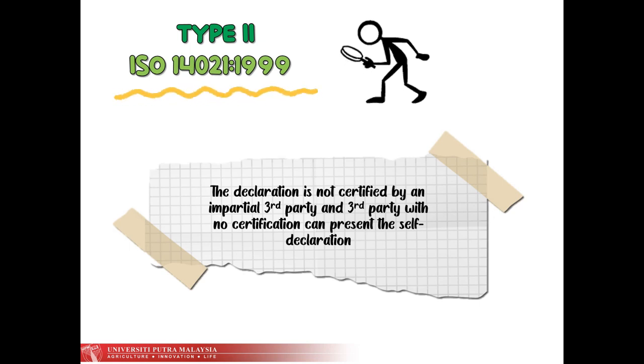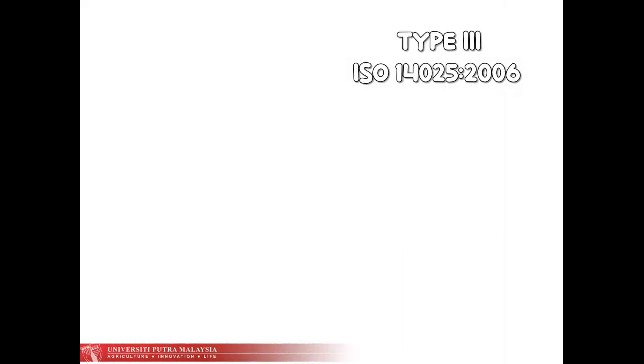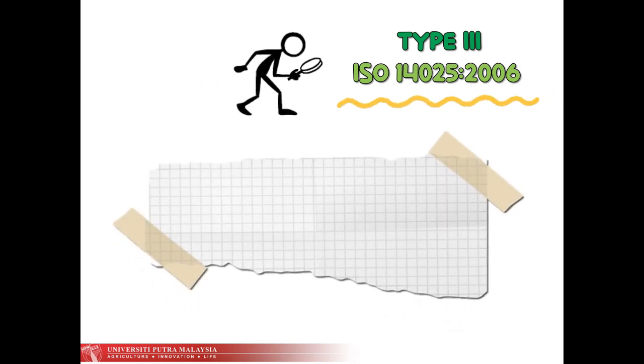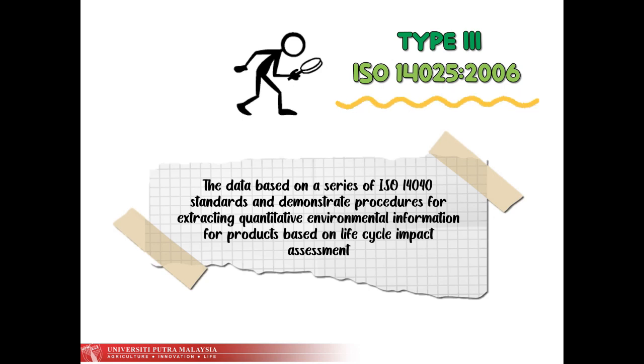And the last one is Type 3 ISO 14025 2006. It states that the data of quantitative environmental information for products life cycle impact assessment must be presented based on a series of ISO 14040 standards. It is used to share the information and environmental performance of products.